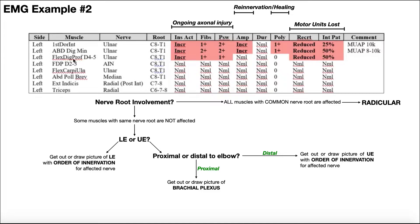Now, with these three muscles, what nerve am I going to be looking at most likely? All three of them have the ulnar nerve as something in common, so I'm going to be looking at the ulnar nerve. You might say: this muscle down here, flexor carpi ulnaris, also has ulnar nerve innervation, but it's normal. That doesn't matter — I'm just considering the sites where there are impairments, and all three of them have ulnar nerve contributions.